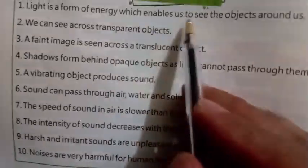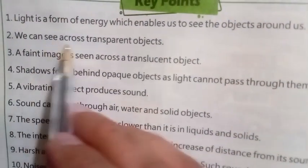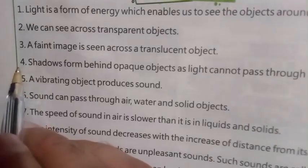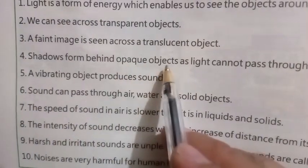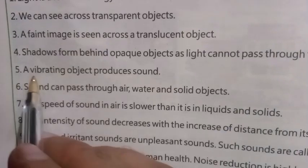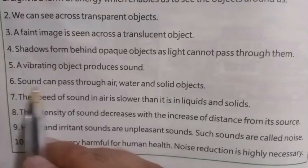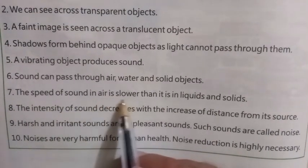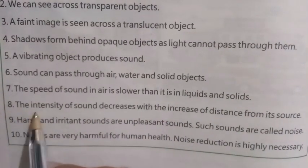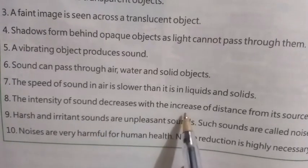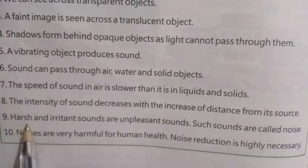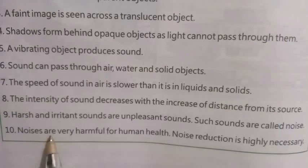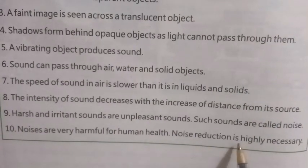Key points: Light is a form of energy which enables us to see the objects around us. We can see across transparent objects. Shadows form behind opaque objects as light cannot pass through them. A vibrating object produces sound. Sound can pass through air, water, and solid objects. The speed of sound in air is slower than it is in liquids and solids. The intensity of sound decreases with the increase of distance from its source. Harsh and irritant sounds are unpleasant and are called noise. Noise is very harmful for human health and noise reduction is highly necessary.